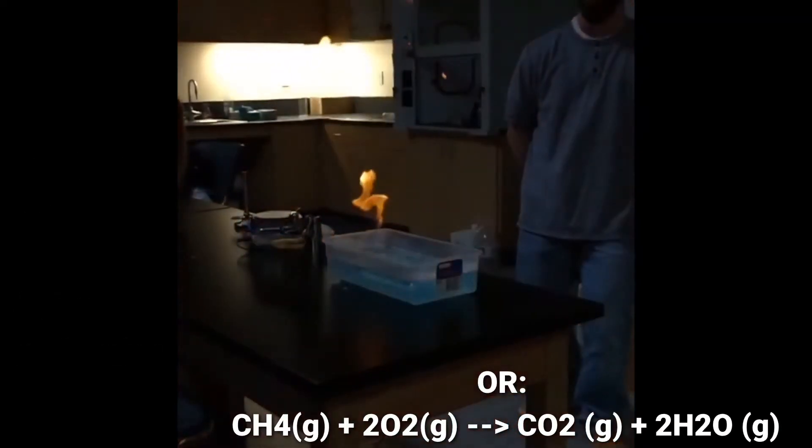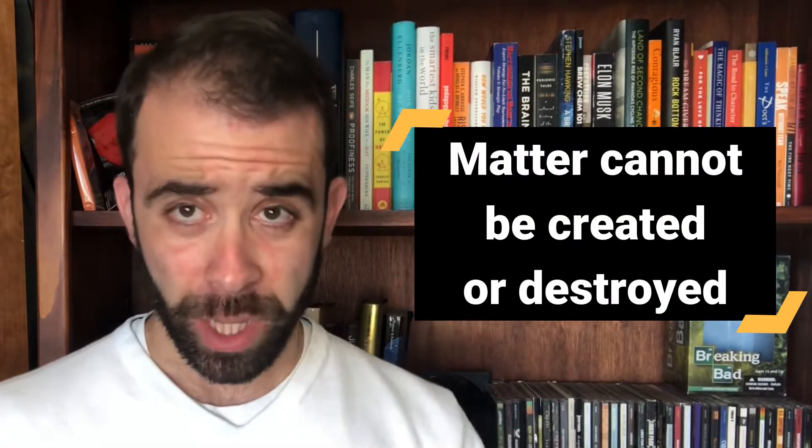In chemistry, there's a fundamental law called the law of conservation of matter. The law of conservation of matter states that matter cannot be created or destroyed. For this reason, it's important that we use what's called coefficients to balance chemical equations. We do this to show that atoms are never created or destroyed in a chemical equation or a chemical reaction. Energy and matter are both conserved. What you start with is what you end with, it's just rearranged or transferred.